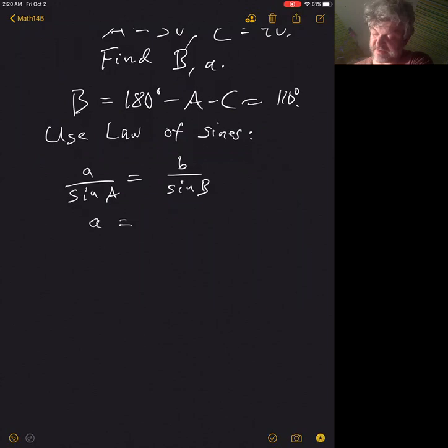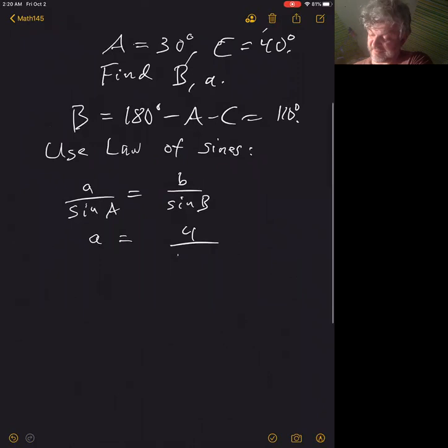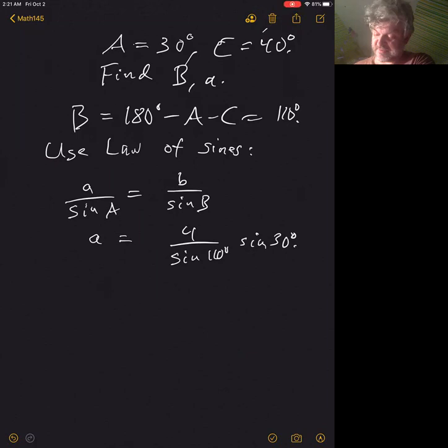Side lowercase a - we get a is 4 divided by sine 110 times sine of 30 degrees, which is going to be some weird number, not a nice number. Anybody can put that into a calculator.